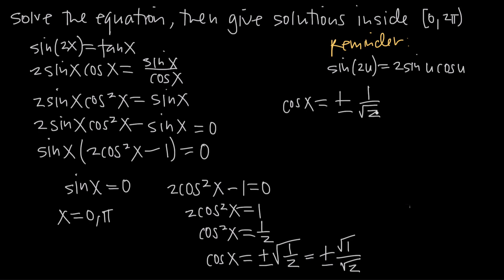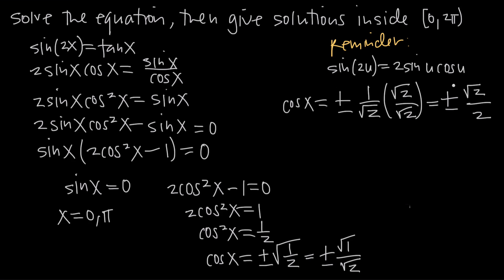We want to rationalize the denominator — that means getting the square roots out of the denominator. We do that by multiplying by root 2 over root 2, which equals 1, so it doesn't change the value. In the numerator, 1 times root 2 is root 2. In the denominator, root 2 times root 2 is 2. So cosine of x equals positive or negative root 2 over 2. Going back to the unit circle, cosine is represented by the x-value in the coordinate point, so we're asking where the x-value equals positive or negative root 2 over 2.